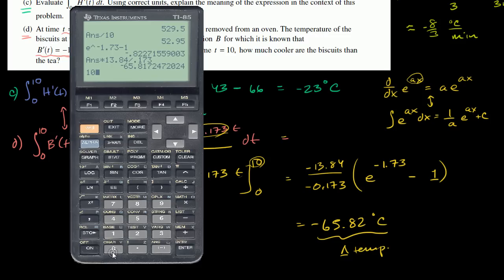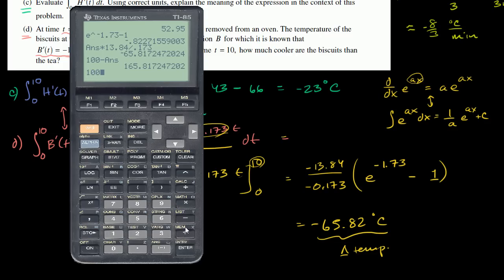They started at 100 degrees. I want to add the change in temperature — and since the change is negative 65.82, that means I compute 100 minus 65.817. After 10 minutes, the biscuits are at 34.18 degrees Celsius.